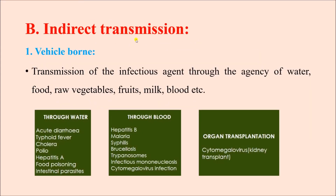Now coming to indirect transmission. The first type is vehicle-borne. Transmission of infectious agents occurs through the agency of water, food, raw vegetables, fruit, milk, blood, etc. — all of these are considered vehicles. If the infectious agent is passed to the susceptible host through these vehicles, this is known as vehicle-borne infection.